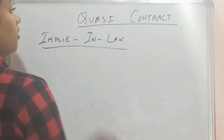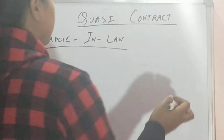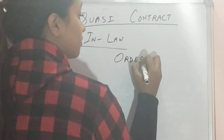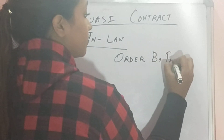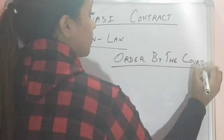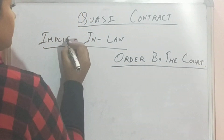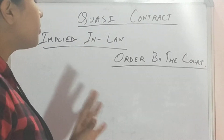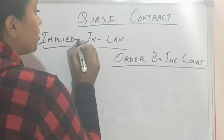Implied in law, which is actually an order given by the court. So it is implied in law and it is an order given by the court. So what do you mean by the phrase 'implied in law and order given by the court'?